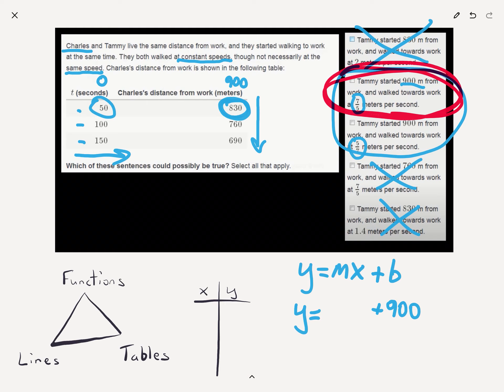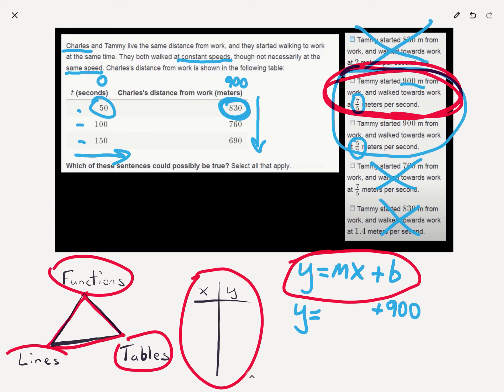So, by comparing different information, right, different forms of the same function, we had a table for Charles, and we had enough information about Tammy to create a function, okay? So, we were able to do a table and a function and connect them together to create a line, okay? That's why and how we would compare functions.